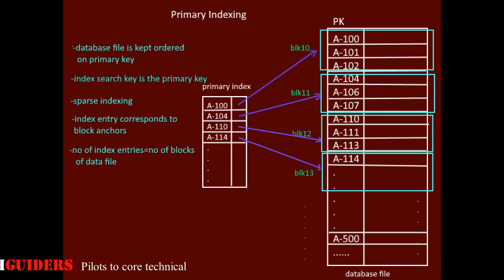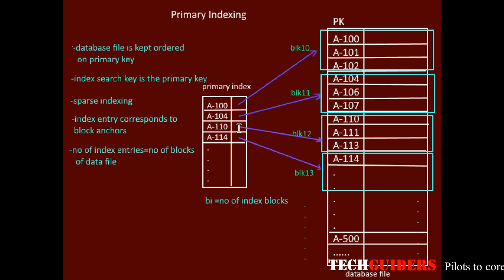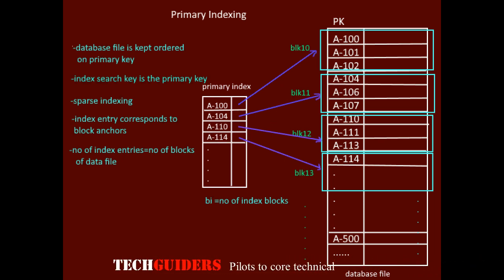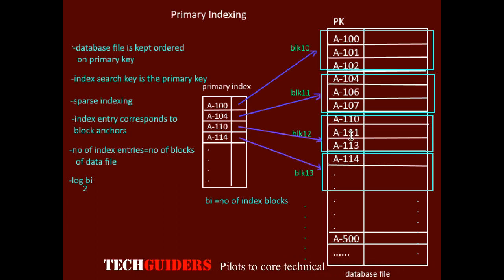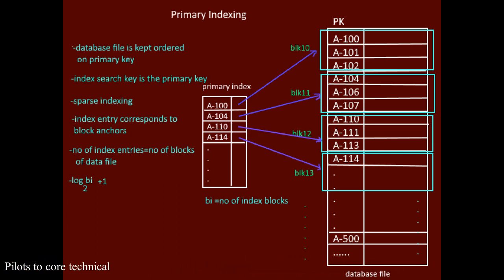Let Bi be the number of blocks required to keep the index file on disk. Then on average, the number of block accesses required to locate a searched index record is log Bi to the base 2. After locating the index entry, we access the block pointer and retrieve the corresponding block, requiring one more block access. So in total, we require log Bi (base 2) + 1 block accesses on average.